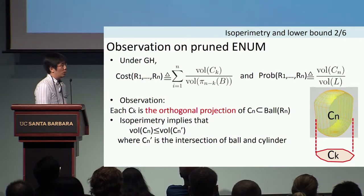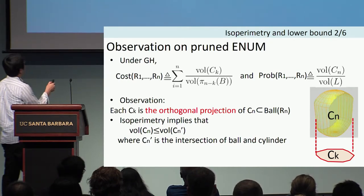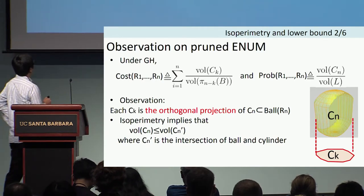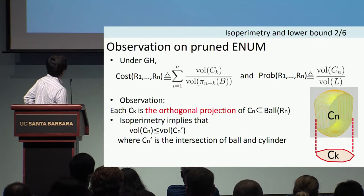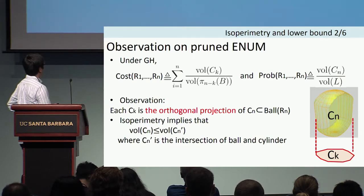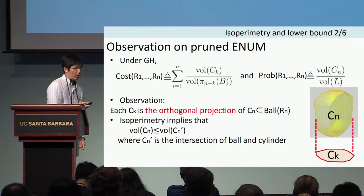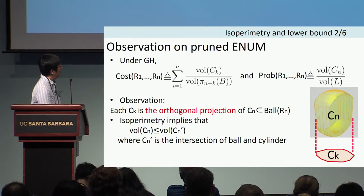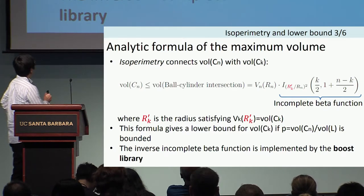How do we use this isoperimetric lemma to bound the enumeration cost? We observe that each CK is an isoperimetric projection of Cn. This relation implies that the volume of Cn is bounded by the volume of Cn prime, where Cn prime is the intersection of the ball and a k-cylinder. So we obtain an upper bound on the volume of Cn, and after some calculation, we get an analytic formula for this upper bound.